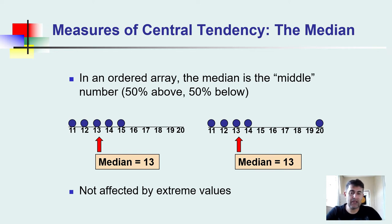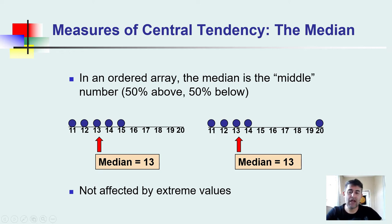The next central tendency is the median. The median is the middle number when data is ordered. It places 50% of the data above and 50% below it. For instance, with five data points — 11, 12, 13, 14, 15 — the median is 13 because it stands at the middle point. The median is not affected by extreme values.